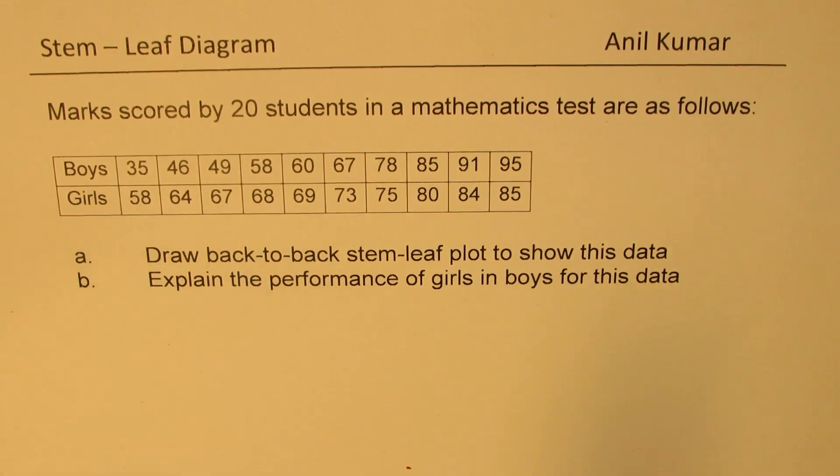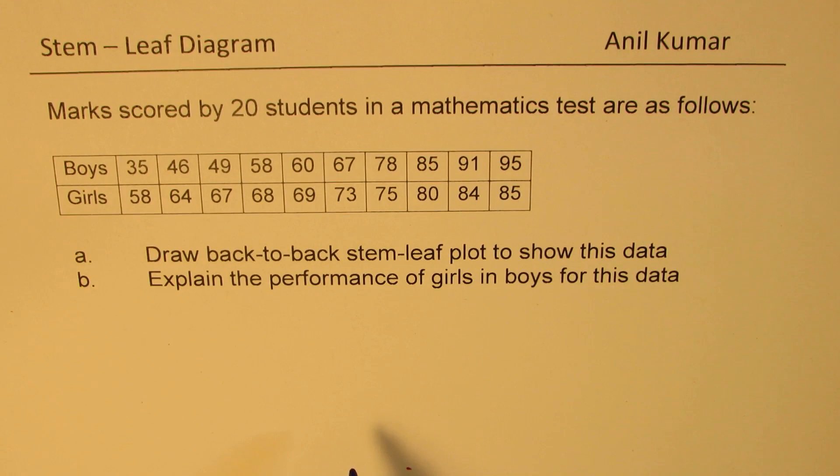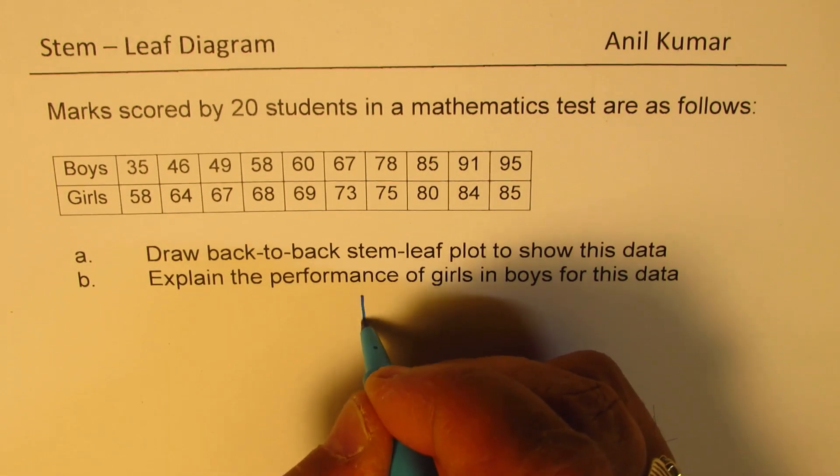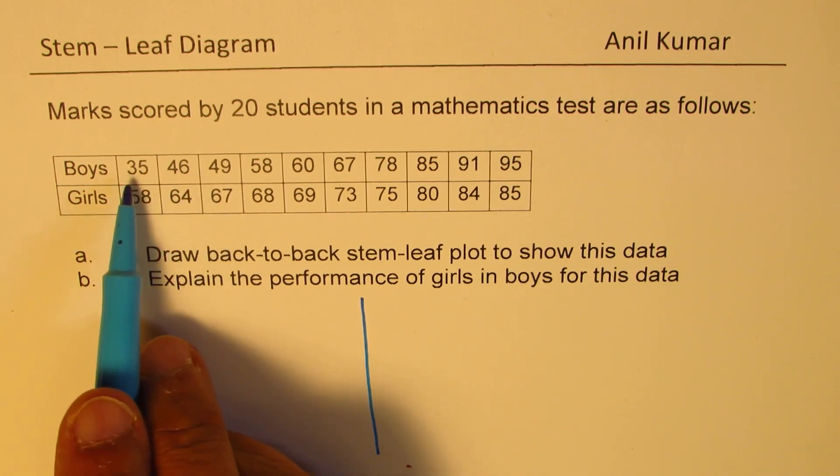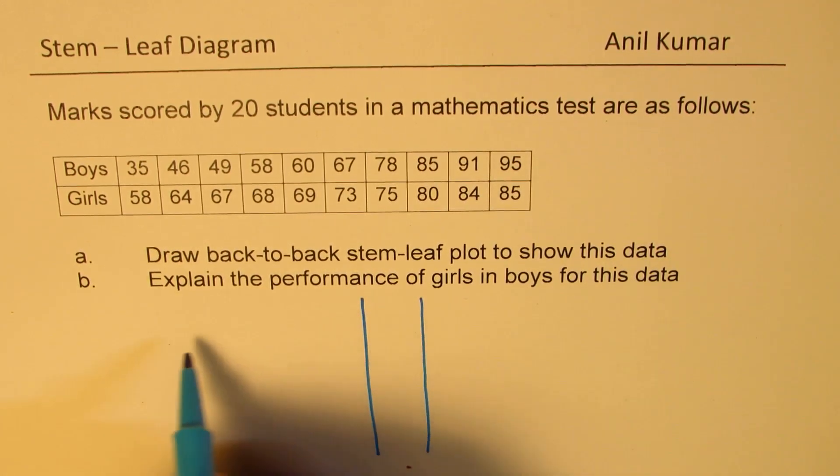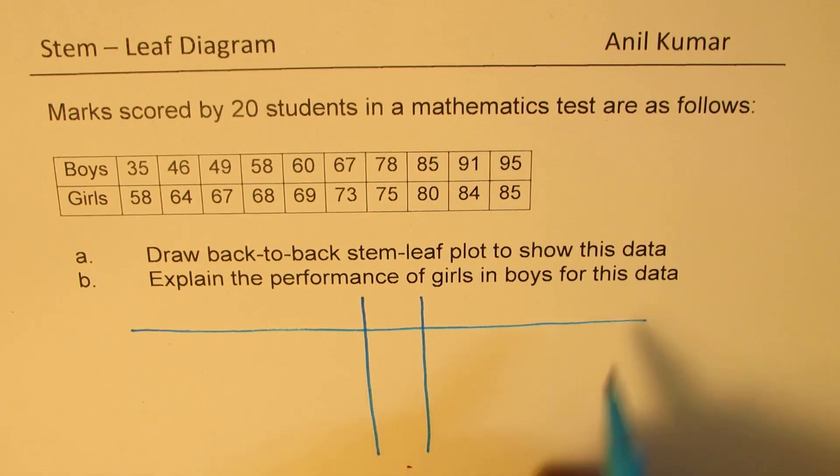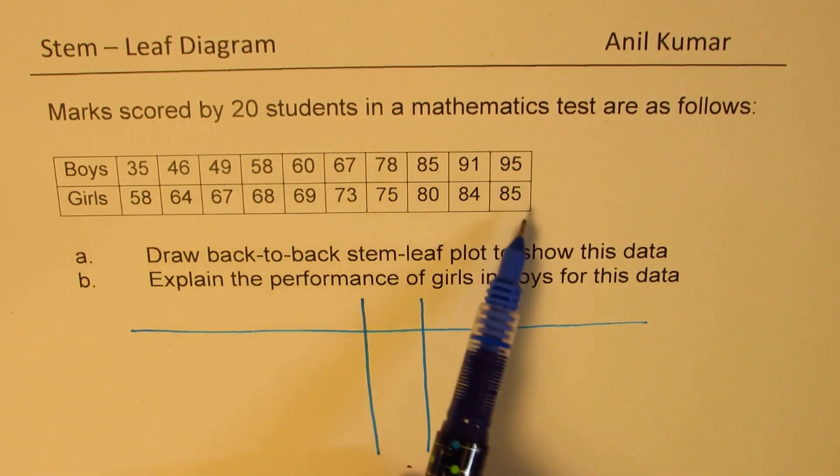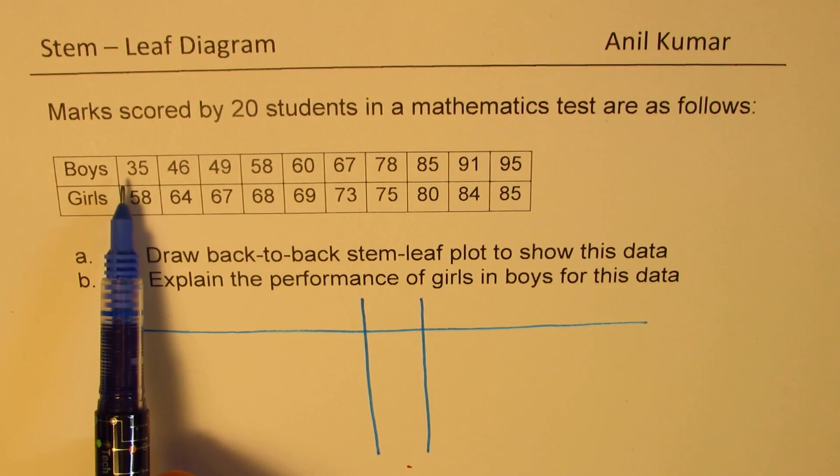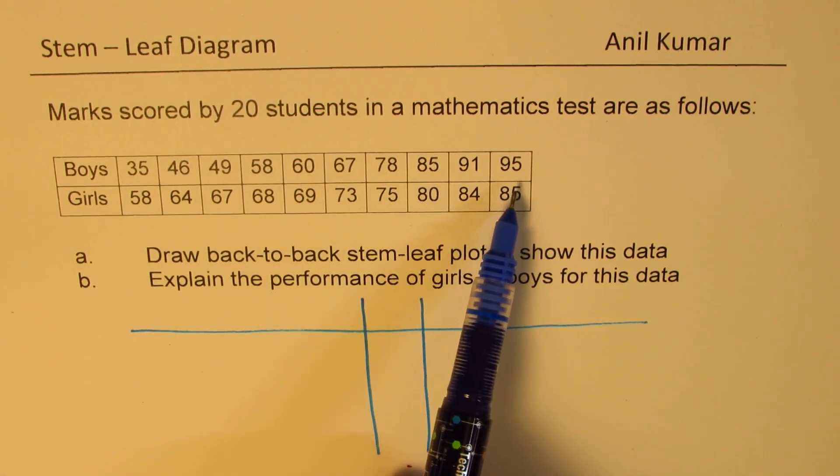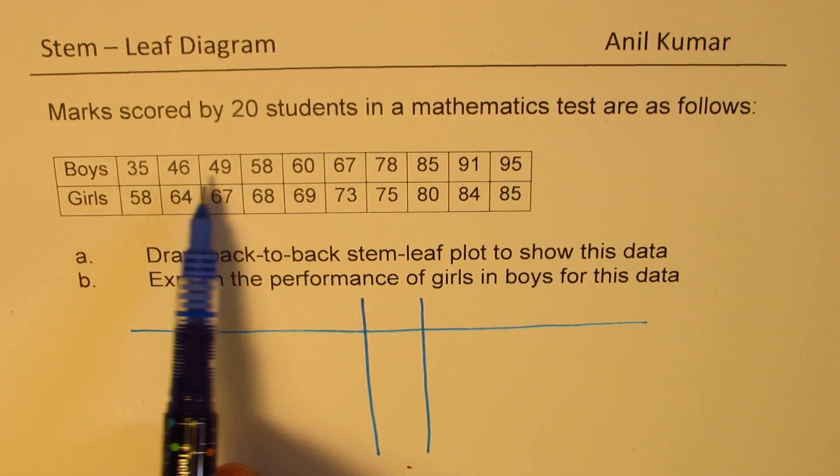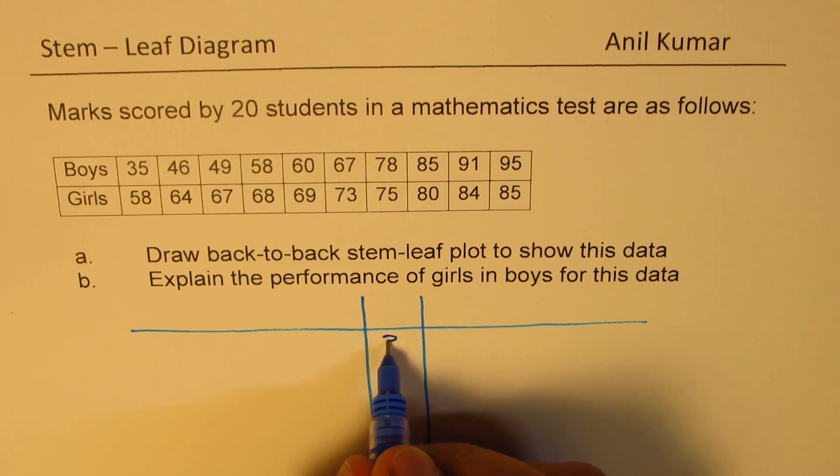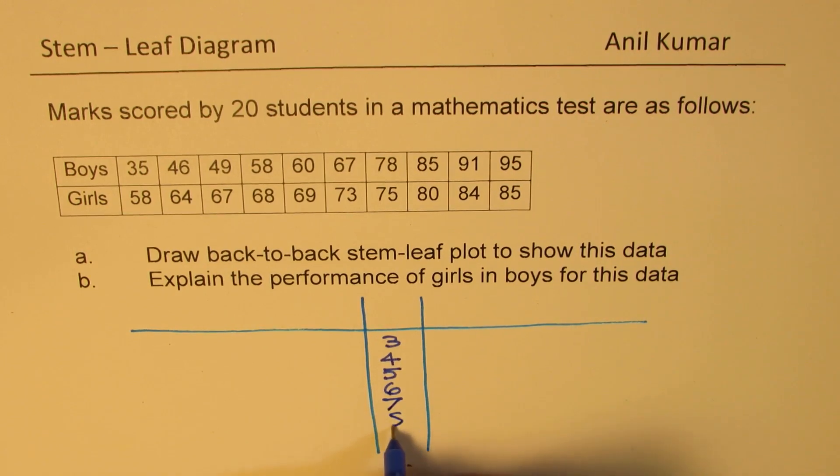Now in this, we can have stem in between. So what we normally have here is stem in between. So since it is 35, 46, so 3 becomes a part of the stem. And on the other side, we can have the leaf. So the structure is kind of like this. What you see here is data from, it has been arranged, normally it may not be arranged, goes from 35 to 95. So in the stem part, we get 3, 4, 5, 6, 7, 8, and 9. So I can write this here. So we have 3, 4, 5, 6, 7, 8, and 9.